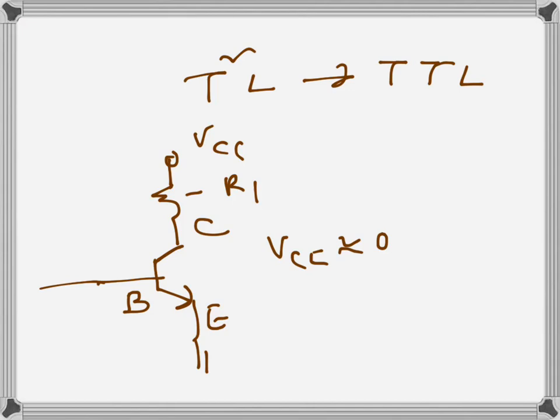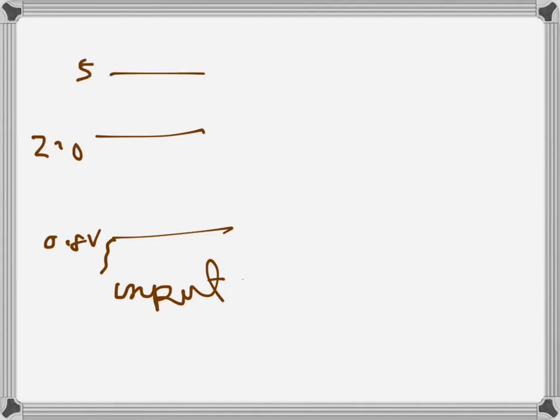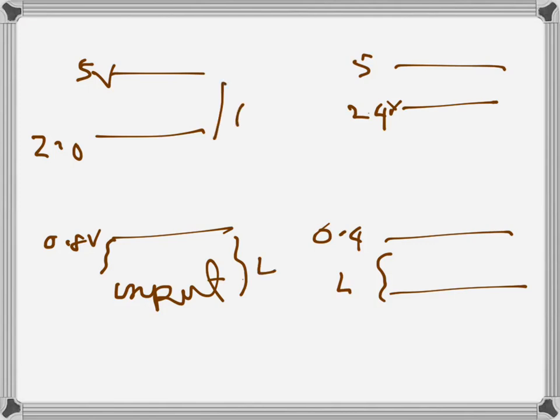So when it's close to zero, this is enough. In TTL gates, for input the range of low is zero to 0.8 volts, and high is 2 volts to 5 volts. For output, it's 5 volts here, this one is 2.4 volts, and this one is 0.4 volts. 0.4 to zero volts is treated as low, and this is high.